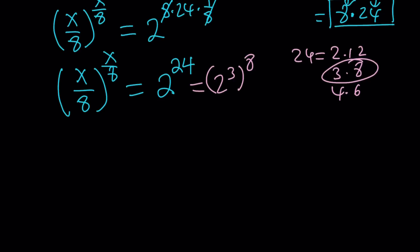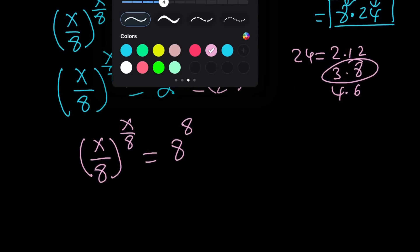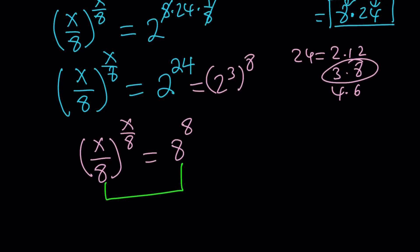So now, to keep a long story short, we're getting the following: x over 8 to the power of x over 8 equals 8 to the power of 8. Lots of 8s, right? So this means, from a one-to-one correspondence standpoint, x over 8 equals 8 is a solution.